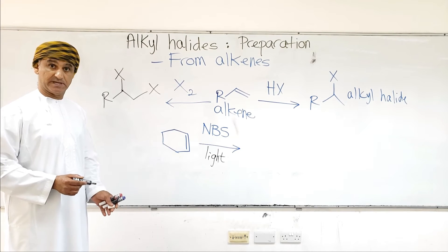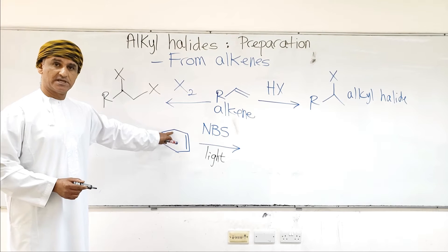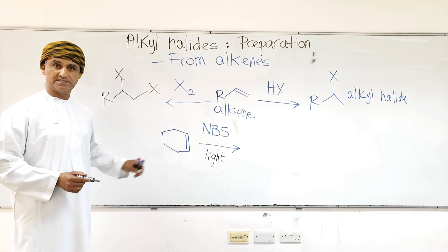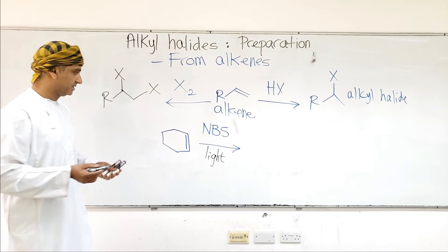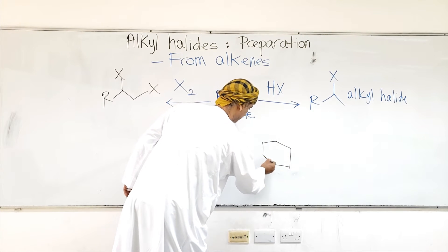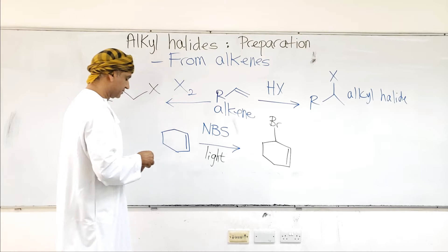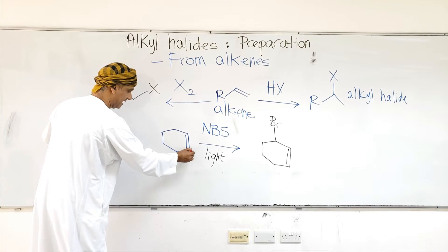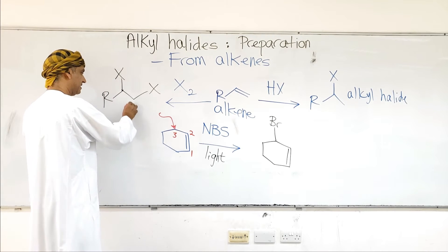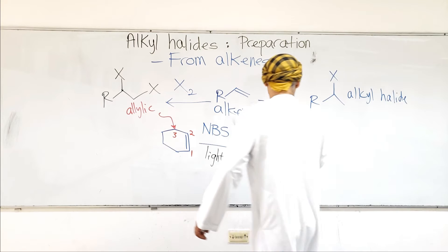A bromination reaction takes place, and interestingly, it takes place not on the carbon-carbon double bond but on position three — the allylic position. Bromination at the allylic position, position three, is described as allylic bromination. This reaction is called allylic bromination because the bromination takes place at the allylic position, which is position number three, counting from carbon one of the carbon-carbon double bond.